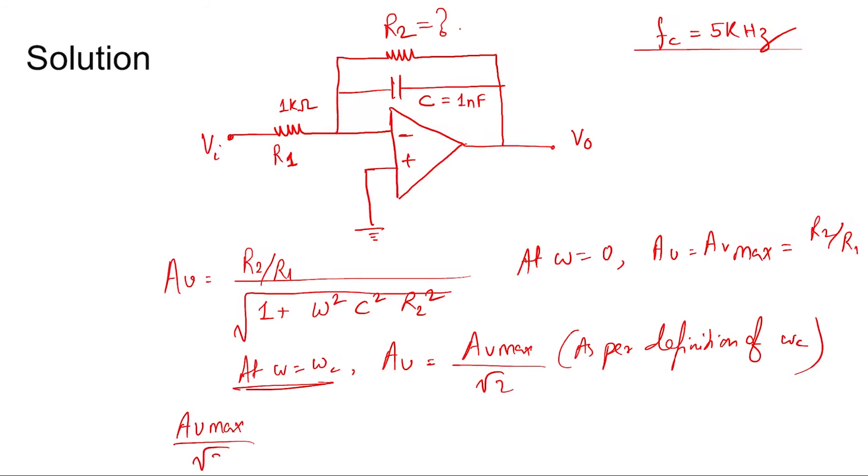Av_max/√2. Also, plugging the expression of Av as a function of ω, we write R2/R1. Instead of writing that, we can write Av_max divided by √(1 + ωc²C²R2²).